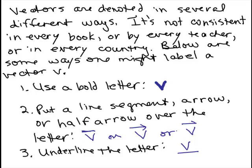One thing that's tricky about vectors is that they are denoted in several different ways. It's not consistent in every book or by every teacher or in every country. I've seen it at least these five ways I'm going to show you right here. Let's say you had a vector V. In textbooks, it's usually a bold letter. Or sometimes they'll put just a little line segment above it or they'll put an arrow above it or they'll put a half arrow. See how it's like both sides of the arrow? Or you might just underline the V. So that's at least five ways I've seen people write a vector.